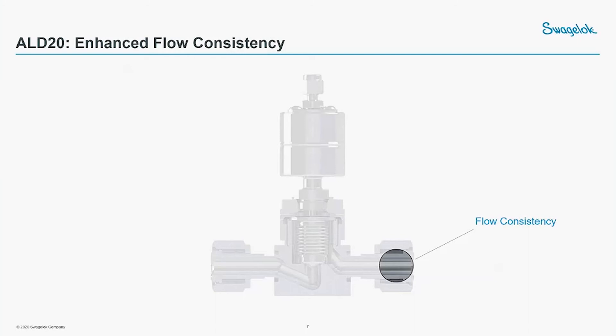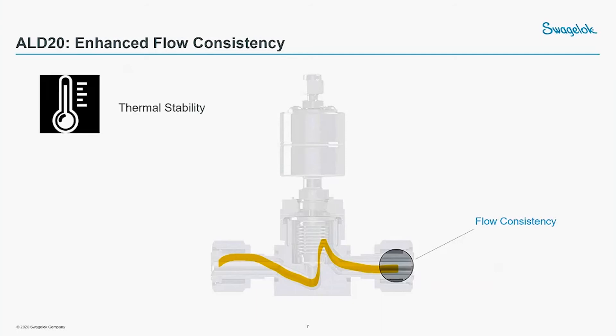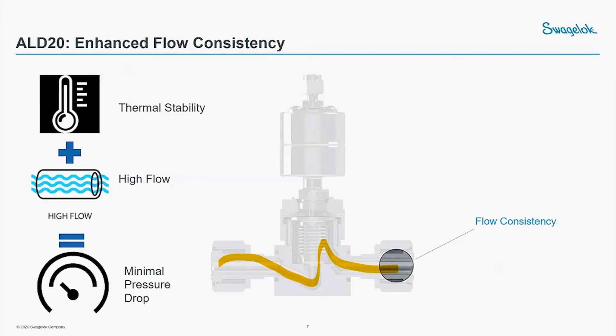The next feature is flow consistency. Flow consistency is important because the gas needs to be inserted through the wetted areas at high temperature. That means we need to reach thermal stability, ensure a high flow rate through the valve, and ensure a minimum pressure drop across the channel — with the output achieving full flow consistency.